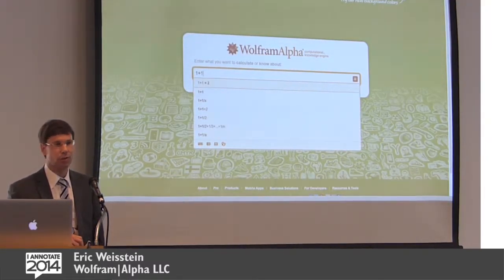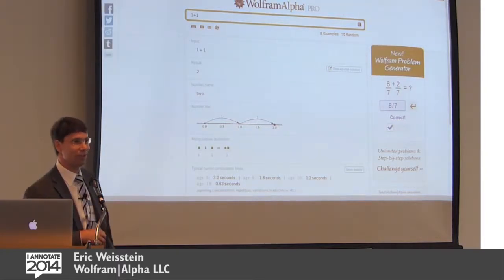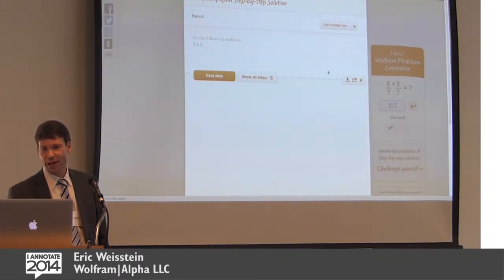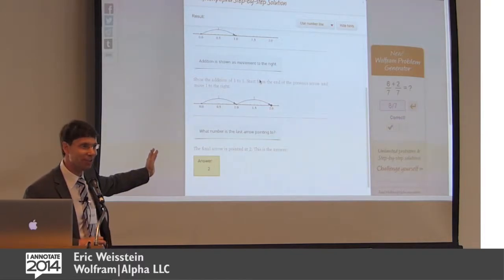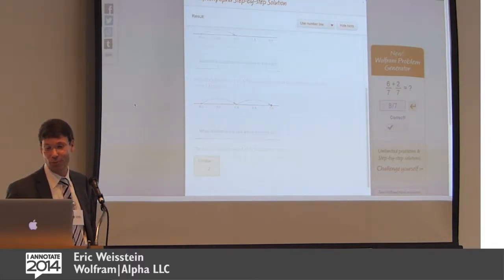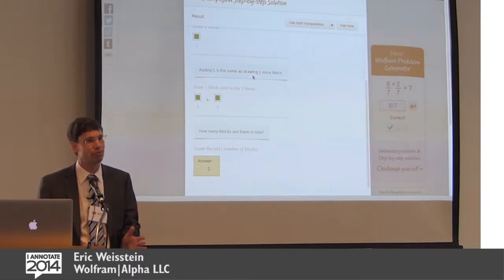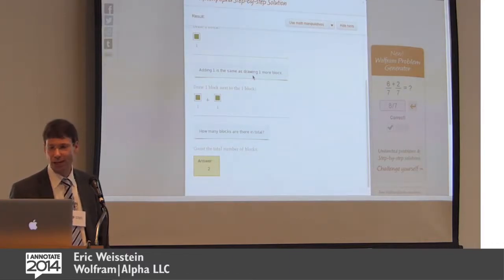The simplest natural language query you can think of — one plus one equals two — and hopefully we get that one right. There is a tie-in to annotations here. In addition to just giving you the answer, we have the ability to do step-by-step solutions for any of these problems. This is a form of annotation — a computer-generated annotation. It doesn't just work for one plus one; it works for pretty much anything. Furthermore, we have multiple different ways of annotating: if you don't like the number line and you want to use manipulatives, we can do that too. This shows you can write computer programs that do annotation for whole classes of inputs.